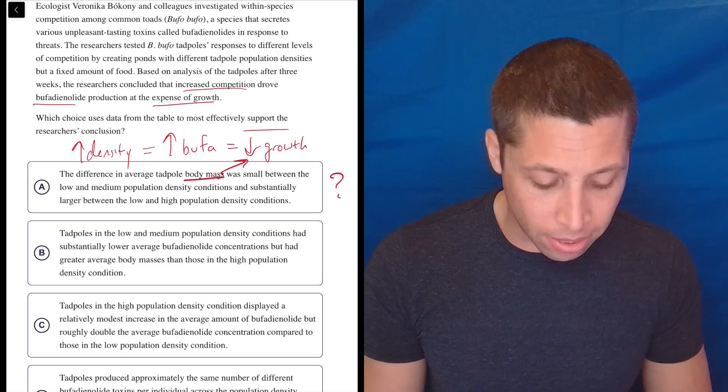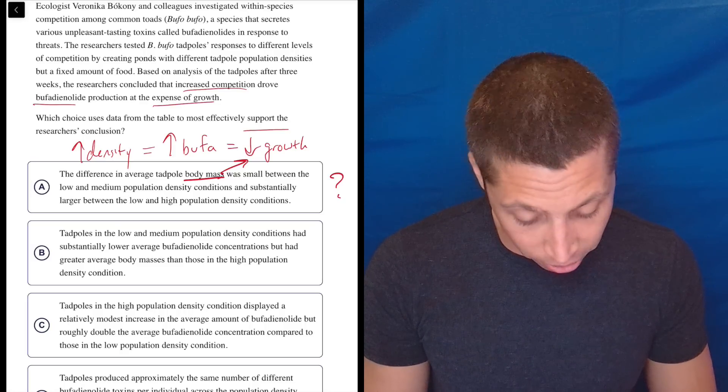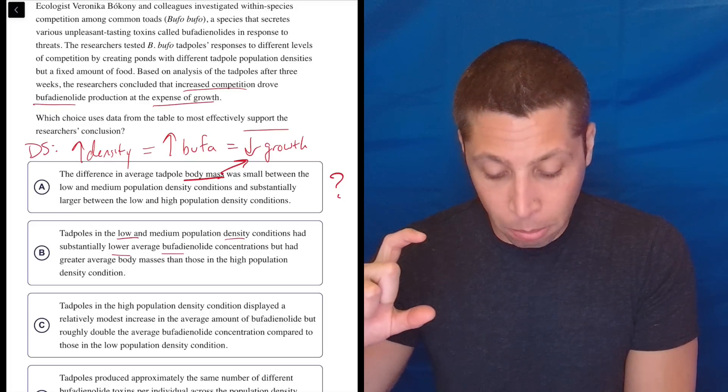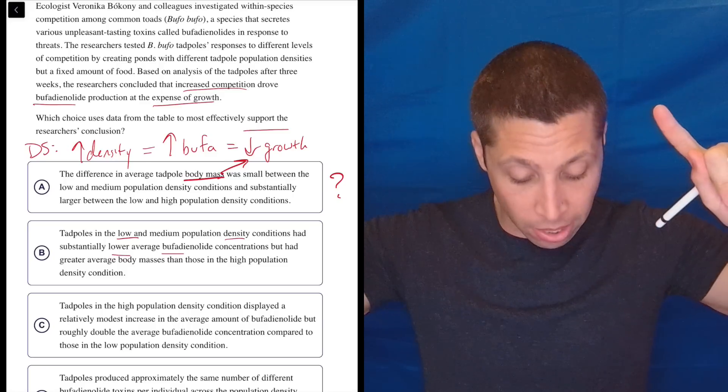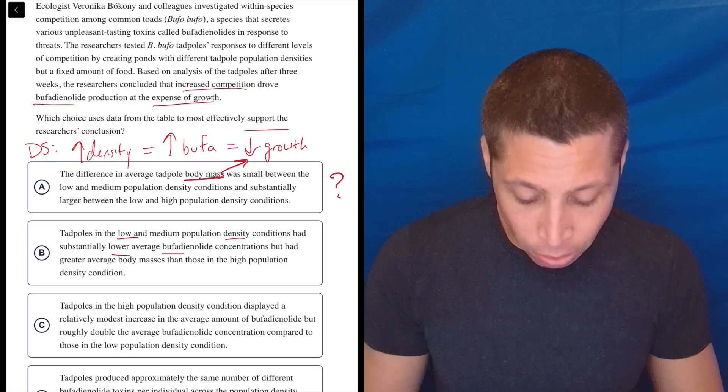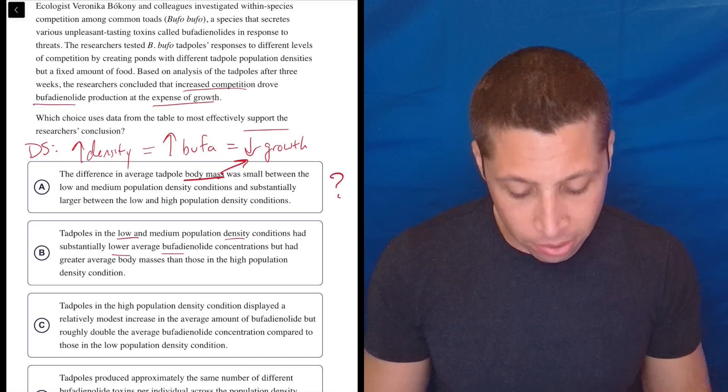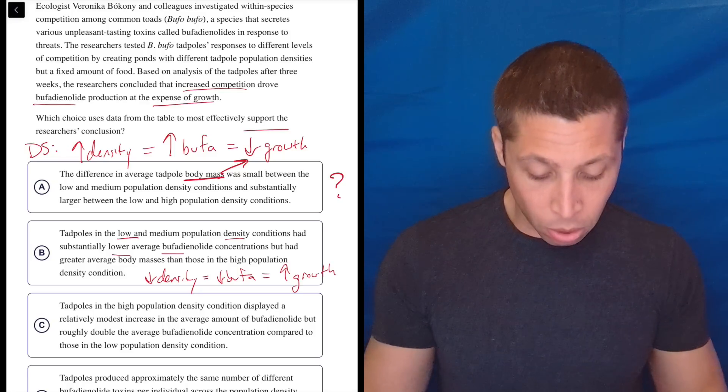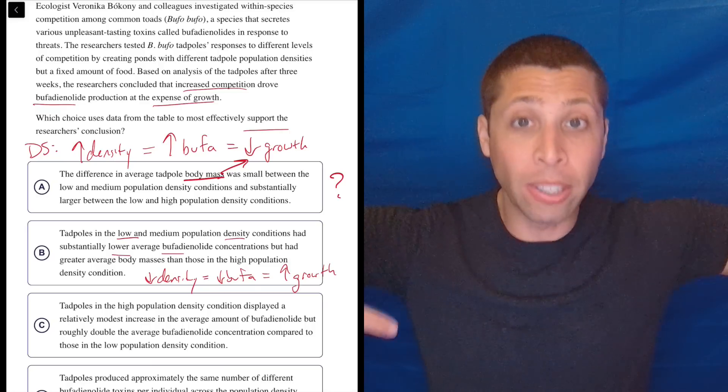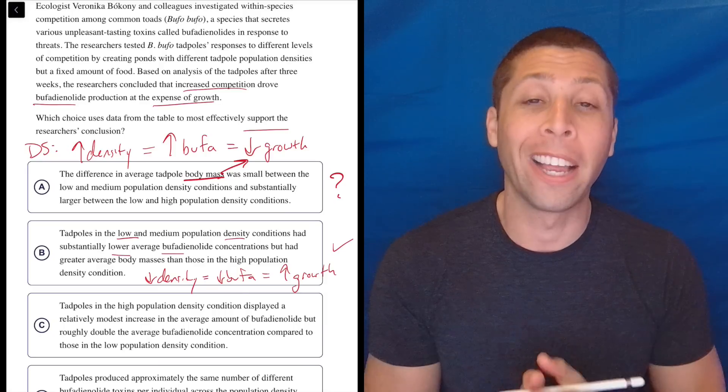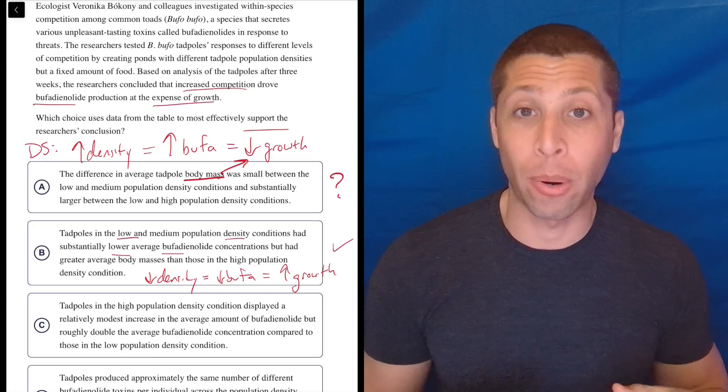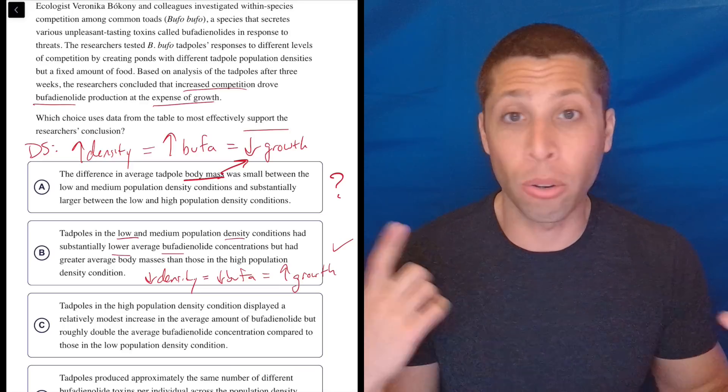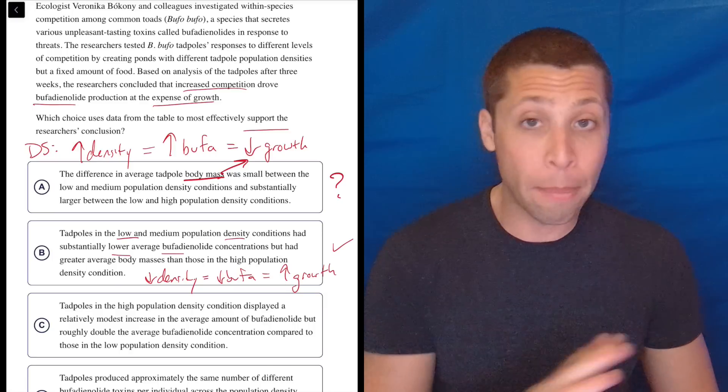B, tadpoles in the low and medium population density conditions had substantially lower average bufa concentrations. So that's low density has low bufa concentrations. So that—notice that's taking my dumb summary and flipping it, right? We said high density is going to have high bufa. This is saying low density is going to have low bufa. That's the same thing, right? It's the same relationship. But they had greater average body masses than those in the high population density, right? So this is saying low density has low bufa and high growth, right? High mass. So notice that is the exact same set of relationships that I wrote out. Just everything is flipped. That's a good sign. Not only is that consistent with our dumb summary, but just knowing the SAT, that is a very common way that they make questions harder. Is they tell you the direction in one way, and then the answer choice preserves the relationship but flips the direction. So that's—they're trying to throw you off the scent. So I really like this choice.